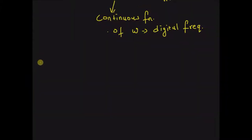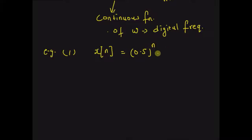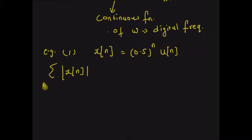Now let us look at an example. Given the sequence x of n equal to 0.5 to the power n multiplied by the unit step sequence u of n. We can clearly see that the sum of the absolute values of x of n from minus infinity to plus infinity equals the sum from n equal to 0 to infinity of 0.5 to the power n, which is clearly less than infinity.